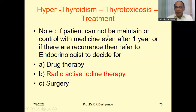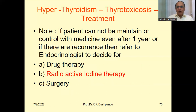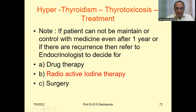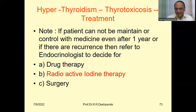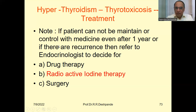Note: if the patient cannot be controlled with medicines even after one year, or if symptoms recur after temporarily coming down, then the general practitioner should refer these cases to an endocrinologist — a specialist of hormones and the endocrine system. There are then three alternatives: higher-intensity drug therapy, radioactive iodine, or finally surgery as a last measure.